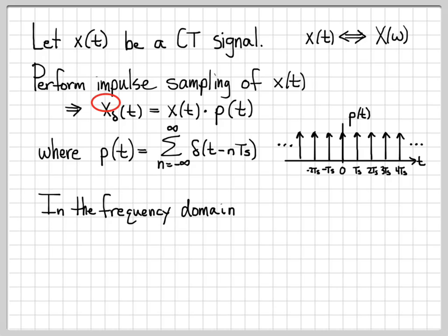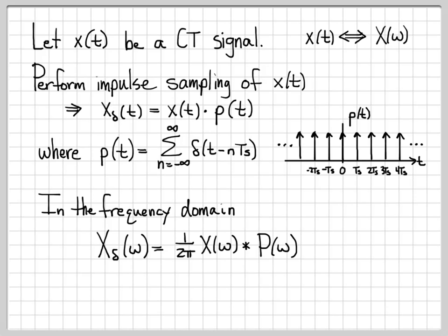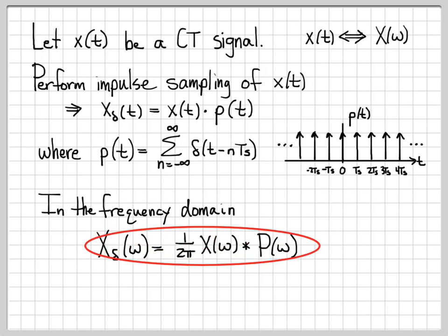Let's think about this equation in the frequency domain — what happens to impulse sampling in the frequency domain. Transforming term by term: x_δ(t) becomes x_δ(ω), which equals x(ω) convolved with p(ω), scaled by 1 over 2π. In the time domain we have multiplication, which means convolution in the frequency domain — that's one of our Fourier transform properties, and the 1 over 2π scale factor comes along with it. This gives us the equivalent frequency domain representation of impulse sampling.